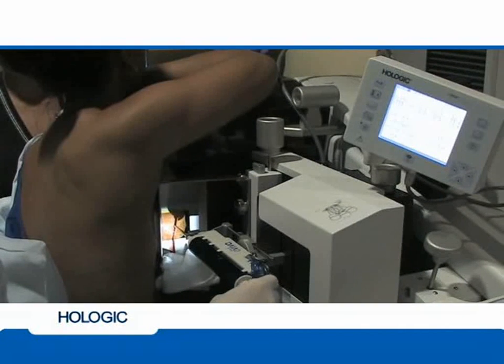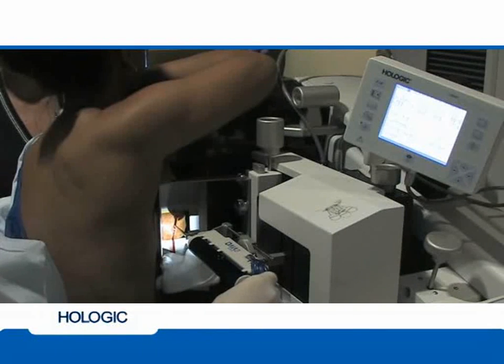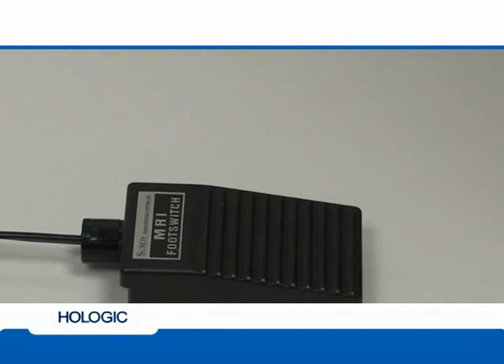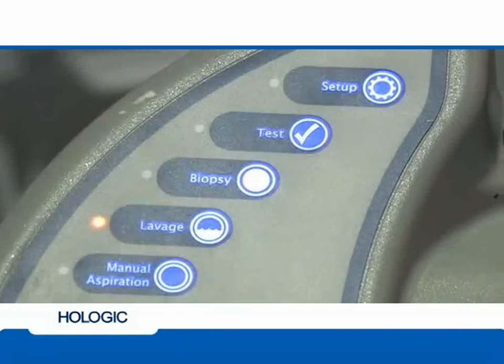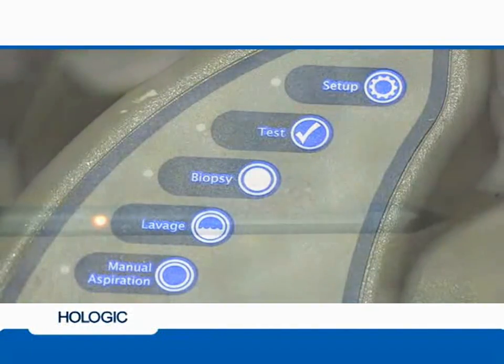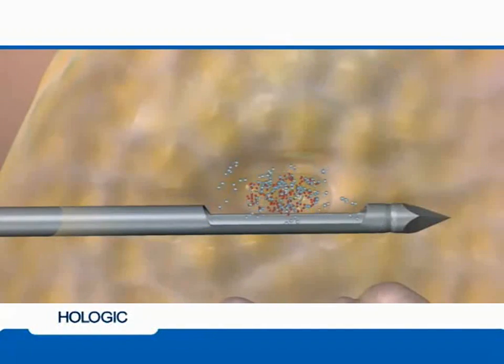An audible beep indicates you're at the end of a cutting cycle and it's safe to turn the device to the next clock position. When the necessary core samples have been retrieved, release the foot pedal at which time you will hear a double beep and switch the console to lavage mode by pushing the button marked LAVAGE.